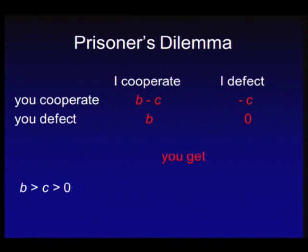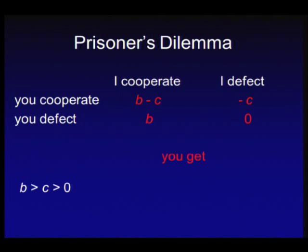Both of these people have the choice between cooperation and defection — they do it simultaneously. The payoff matrix tells you what you get. If I cooperate and you cooperate, then you get B minus C: you get B from my cooperation, but you have cost C for your cooperation. If you cooperate and I defect, you have minus C. If you defect and I cooperate, you have just B. And if you both defect, you both have zero. Benefit is greater than cost is greater than zero.